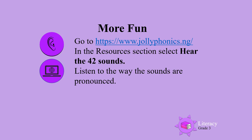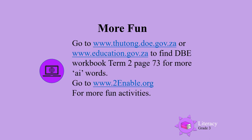For more fun, go to the Jolly Phonics website and in the resources section, select 'hear the 42 sounds' and listen to the way the sounds are pronounced. You can also go to the DBE website and find the DBE workbook term two, page 73 for more A-I words. Also go to www.toenable.org for more fun activities.